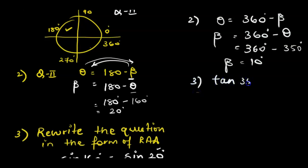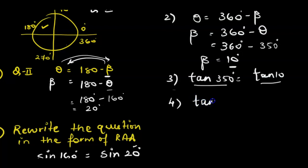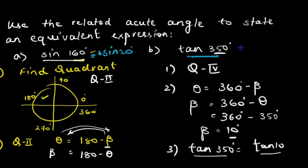Step three: rewrite tan 350 degrees in terms of tan 10. Step four: use the CAST rule. In the fourth quadrant, cosine is positive — it is not the house of tan — so tan in the fourth quadrant is negative. Therefore, tan 350° = negative tan 10°. The ratio of tan 350 and tan 10 is the same, but we take the negative of tan 10 to equal tan 350.